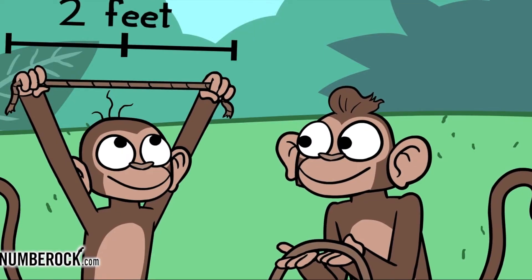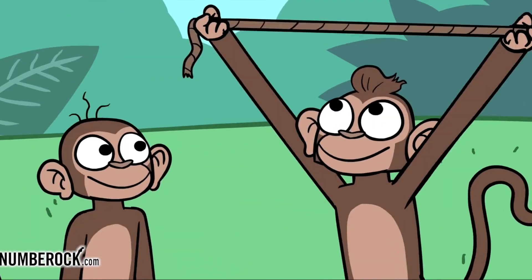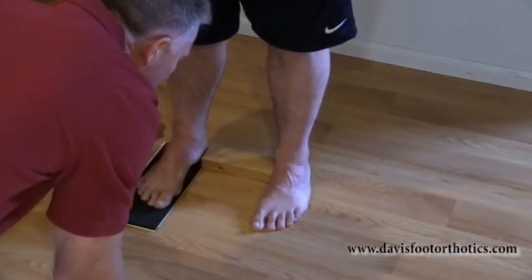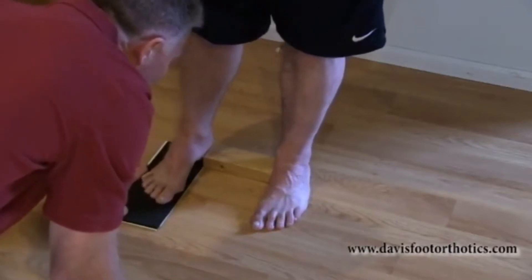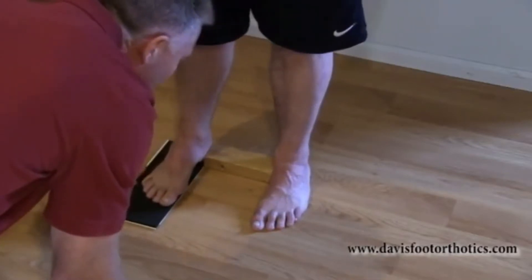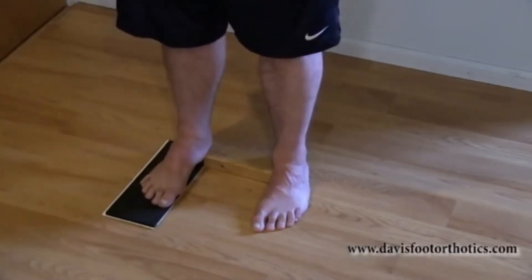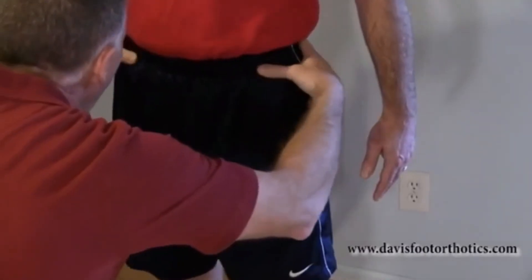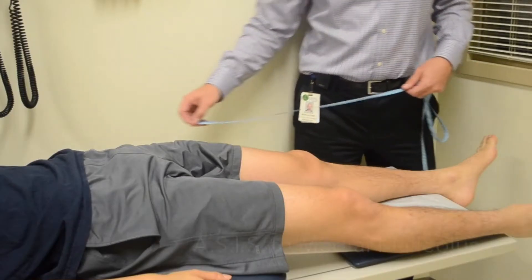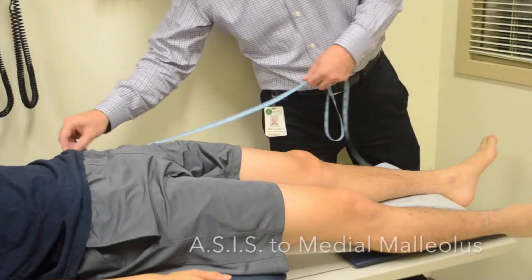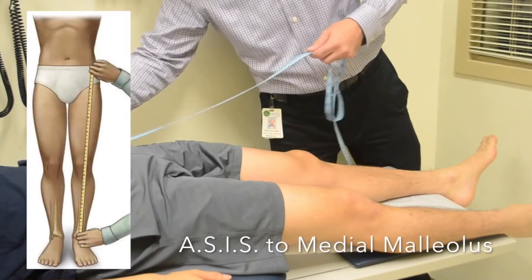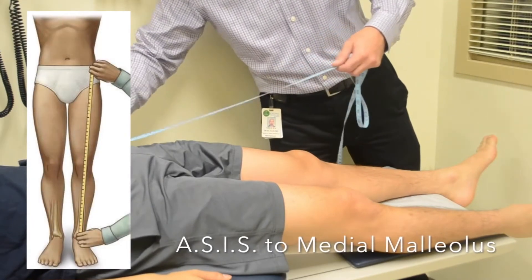Let's start with how to measure leg length. There are three commonly used methods: two clinical tests as well as imaging. An indirect method is performed in standing using lifting blocks under the shorter leg and visually examining if the pelvis is level, and a direct method is performed in supine measuring the distance of fixed bony landmarks with a measuring tape.